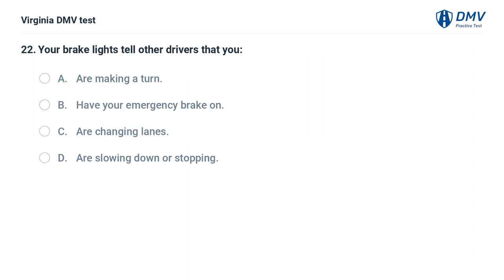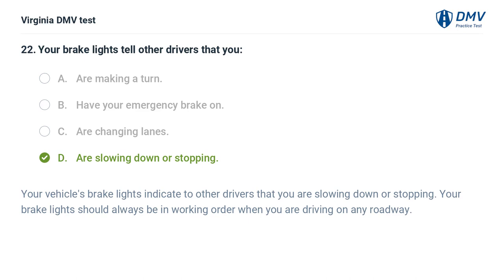Your brake lights tell other drivers that you: A. Are making a turn, B. Have your emergency brake on, C. Are changing lanes, D. Are slowing down or stopping. The correct answer is D: Are slowing down or stopping. Your vehicle's brake lights indicate to other drivers that you are slowing down or stopping. Your brake lights should always be in working order when you are driving on any roadway.